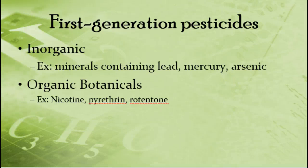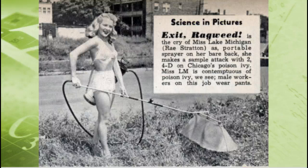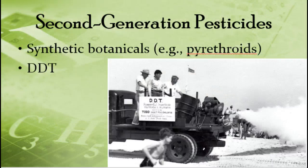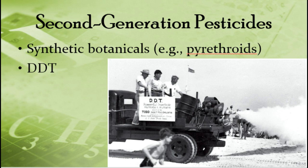Even these first generation botanicals are toxic to other things in the environment — they tend to be highly toxic to aquatic organisms and to bees, which we need to pollinate our crops. Then in the 1940s, 50s, and 60s, we had a revolution in pesticide use that created second generation pesticides. These tend to be synthetic, human-produced. The major group is synthetic botanicals, made by chemically modifying the structure of those natural botanicals — things like pyrethroids and DDT — and they tend to be even more toxic and dangerous in many ways.